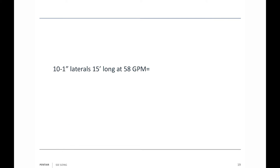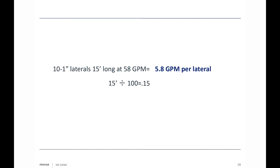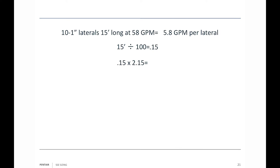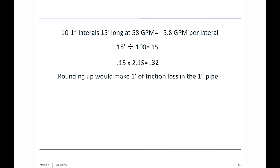For the 10 one-inch laterals, each 15 feet long, distributing 58 GPM total means 5.8 GPM per lateral. 15 feet divided by 100 gives 0.15 hundred-foot lengths of pipe. Looking at the friction loss chart at 6 GPM through one-inch pipe gives 2.15 feet per 100 feet. So 0.15 × 2.15 = 0.32, rounded up to 1 foot of friction loss in the one-inch pipe.